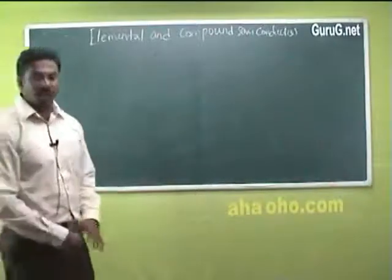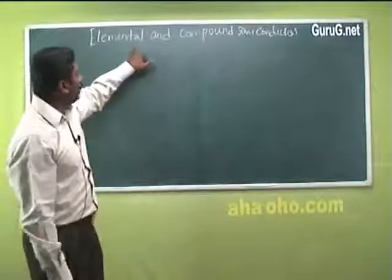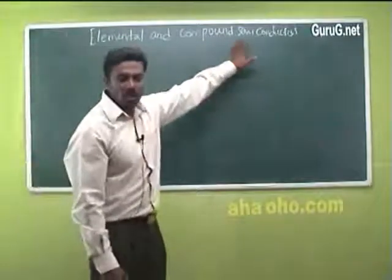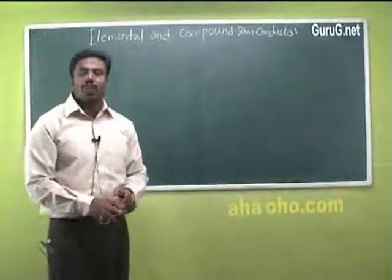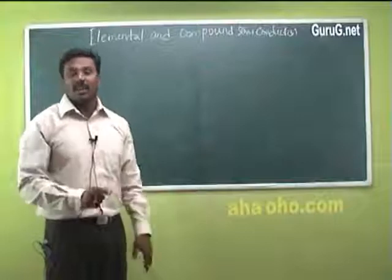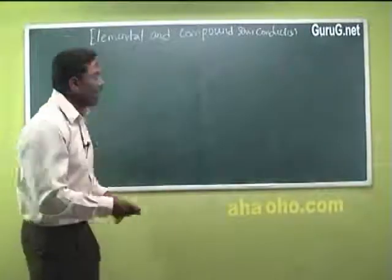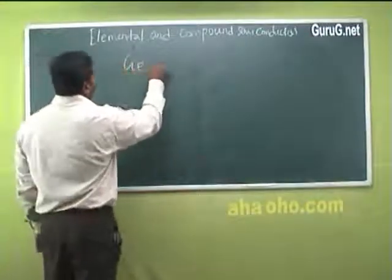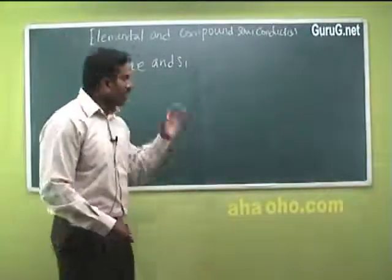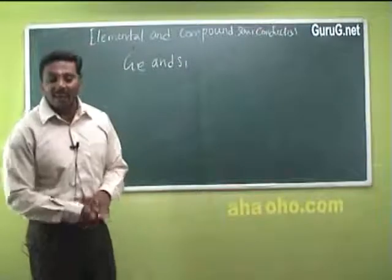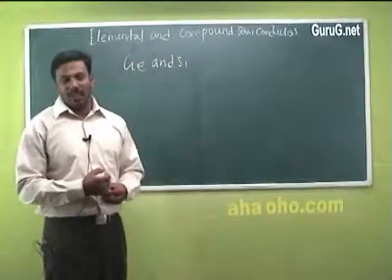Elemental and compound semiconductors: based on composition, semiconductors are classified into two types — elemental semiconductors and compound semiconductors. Elemental semiconductors are the pure form of semiconductors in which the entire semiconductor is made up of a single crystal. Good examples are germanium and silicon. These elemental semiconductors are otherwise called indirect band gap semiconductors.